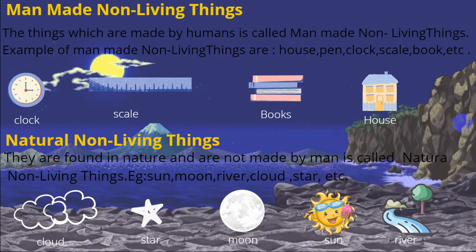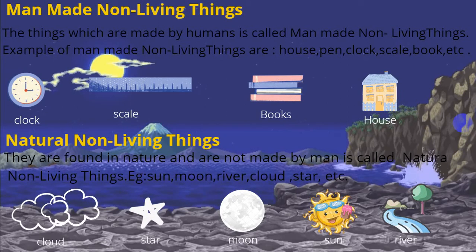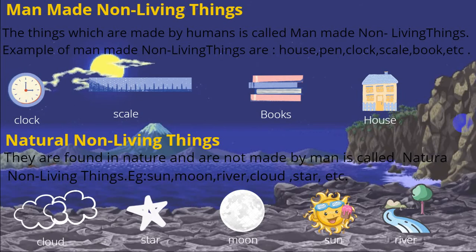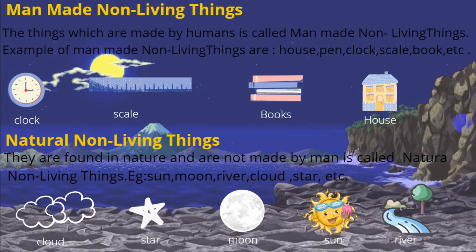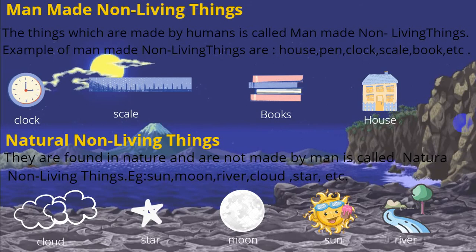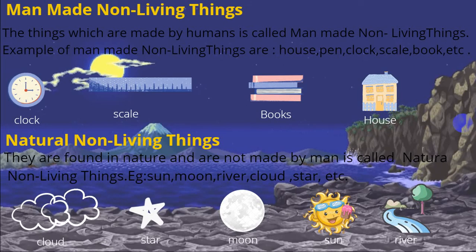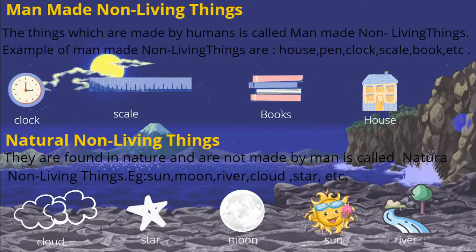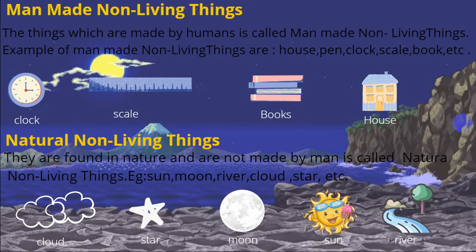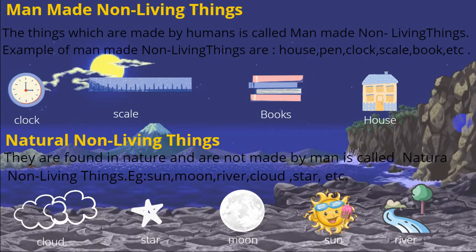Natural non-living things are found in nature and are not made by humans. Examples of natural non-living things are cloud, star, moon, sun, and river.